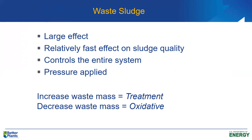Waste sludge is primarily how we control the process. It has a large effect on the characteristics of our biomass, settleability, how the process is operating, treatment efficiency, effluent quality, degree of nitrification, and distribution of the types of microorganisms in the reactor. It just controls everything. It has a relatively fast effect on sludge quality and controls the entire system — the aeration basin or reactor, as well as the secondary clarifier and the sludge return line.